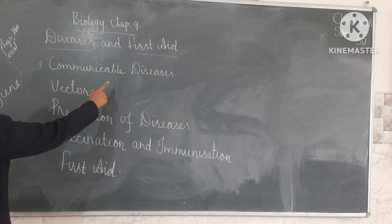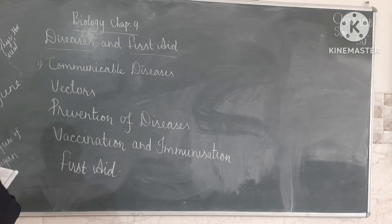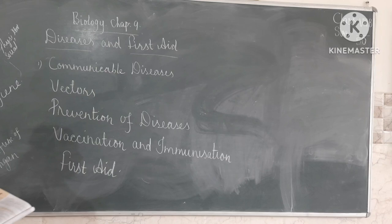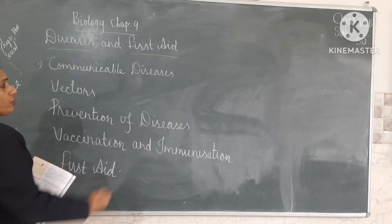On the basis of communicability, diseases can be divided into two types: communicable diseases and non-communicable diseases. Communicable diseases are caused due to different kinds of microorganisms — common microorganisms such as bacteria, fungi, and viruses. Non-communicable diseases are caused by the malfunctioning of organs. In this chapter, Table 9.1 mentions the difference between communicable diseases and non-communicable diseases.